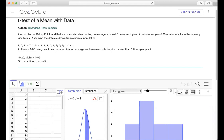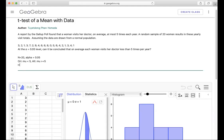From this, we can have that H0, which always has the equal sign, would be mu equals five. And the HA, the alternative hypothesis, would be the other claim, which is mu less than five. Now with that, we're ready for the test.